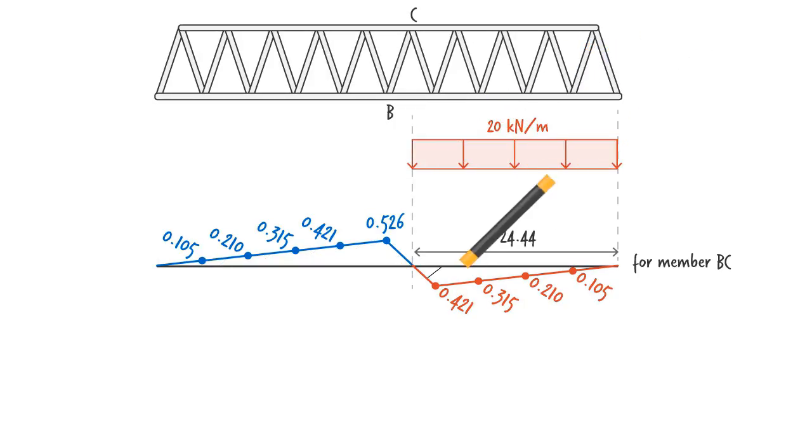And when the distributed load is over the negative area of the influence line, we end up with a compressive force of 103 kilonewtons.